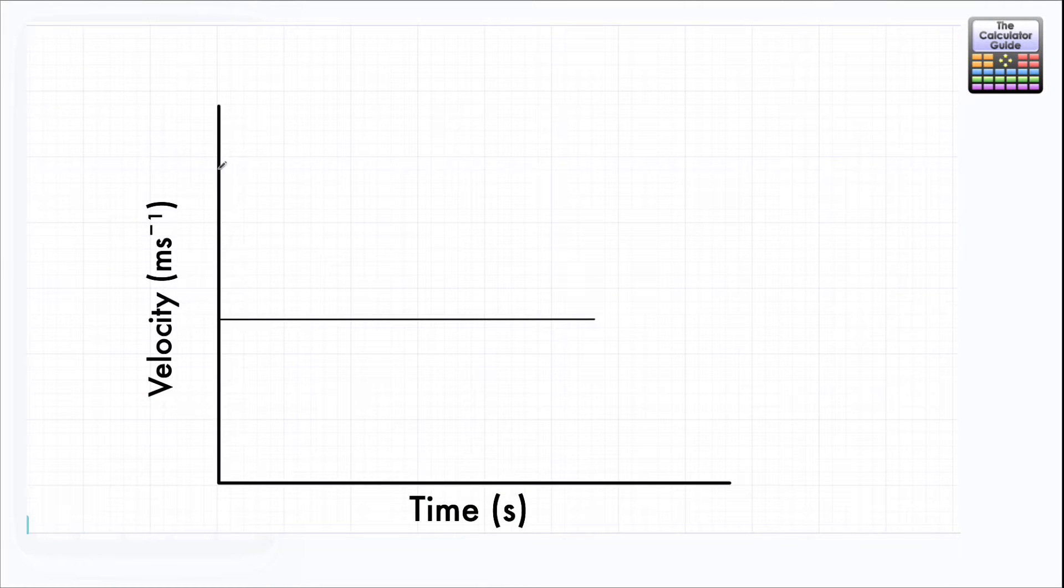In this first video we have here a velocity time graph. We have velocity on the y-axis and that's measured in meters per second. You might have seen this notation before, ms to the power of minus one means meters per second, and on the x-axis we have the time in seconds, so we're using meters and seconds which are standard units there for distance and for time.